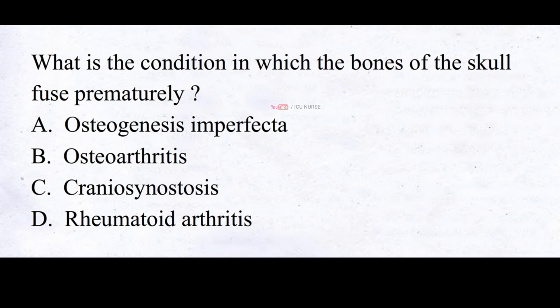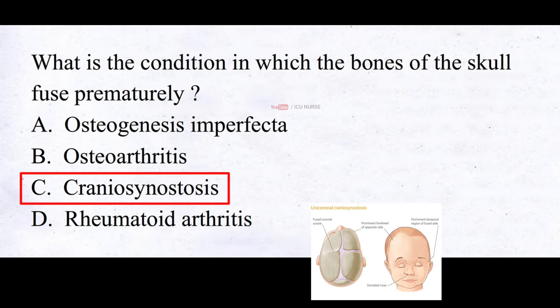What is the condition in which the bones of the skull fuse prematurely? A. Osteogenesis imperfecta, B. Osteoarthritis, C. Craniosynostosis, D. Rheumatoid arthritis. And the correct answer is C. Craniosynostosis.